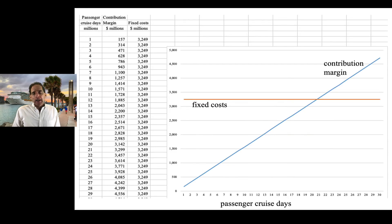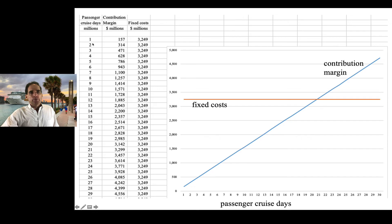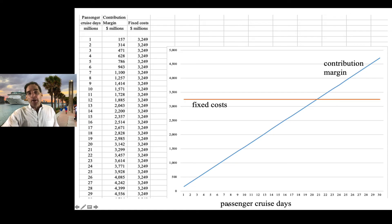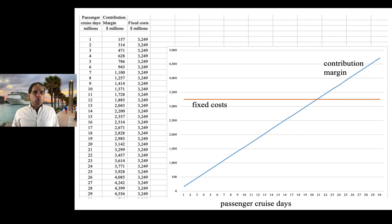At this point, we have everything we need to construct our break-even chart. We list various levels of volume — in this case, passenger cruise days in millions — take our contribution margin and multiply by that. Our fixed costs, of course, remain fixed at $3.3 billion regardless of the number of passenger cruise days. Here's the contribution margin line, and we can see we break even at something like about 19 or 20 million passenger cruise days. That's the break-even point, and that's all we need to do.